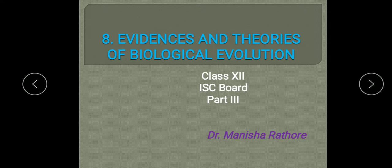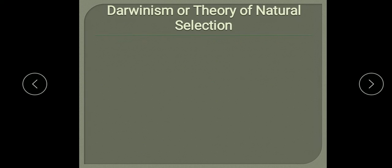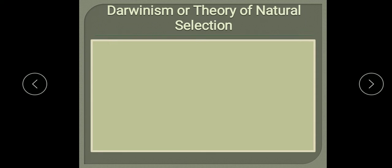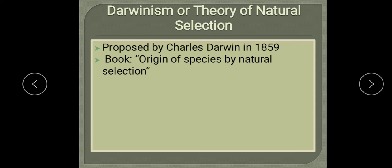Today we will study Darwinism — the theory of natural selection. This theory about the evolutionary process was proposed by Charles Darwin in 1859 in his famous book 'Origin of Species by Natural Selection,' and his theory is popularly known as Darwinism.